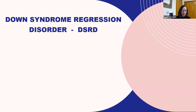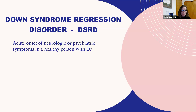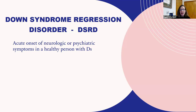Tonight we're going to focus on Down syndrome regression disorder. This is an acute onset of neurologic or psychiatric symptoms in a healthy person with Down syndrome. Usually the timeline is weeks to months of a rather abrupt onset of changes — as opposed to Alzheimer's, which is more of a slow deterioration. This idea of this entity has been around for about 20 years, but it's only been in the last couple of years that experts have agreed on a name and a workup.